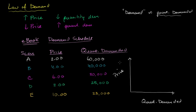We'll put price in the vertical axis and we'll put quantity demanded in the horizontal axis. Our quantity demanded goes all the way up to 60,000. So that's 10, 20, 30, 40, 50, 60. This is in thousands. And then the price goes up to $10, from $2 to $10. So let's say this is 2, 4, 6, 8, and 10.